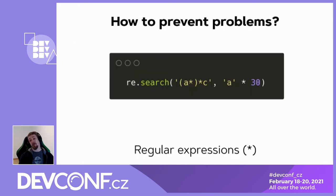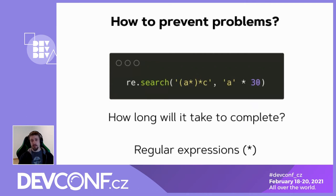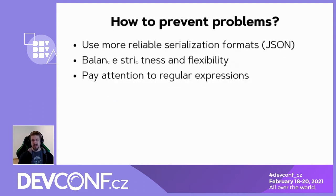Another source of problems is regular expressions. Do you remember the Cloudflare outage from 2019? It was caused by certain kinds of regular expressions that are very resource intensive. For example, these regular expressions took about one and a half minutes on my machine, and I bet that a string of 50 letters won't be processed in any reasonable time at all. So please pay extra attention to regular expressions, and if possible, use alternative ways to express your API constraints, or use regular expression engines that guarantee linear complexity.